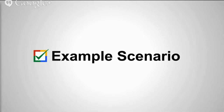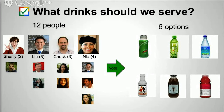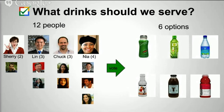Now let's drill down into the details of these different voting methods. We'll take a specific scenario: 12 people voting on six drink options for Friday dinner. We've grouped the 12 people into four preference profiles, so all the people under Nia vote exactly the same, giving her a voting power of four. Google Votes is a liquid democracy system, meaning you can explicitly delegate your vote to other people — these examples also work with non-liquid systems if we imagine four people with identical preferences.